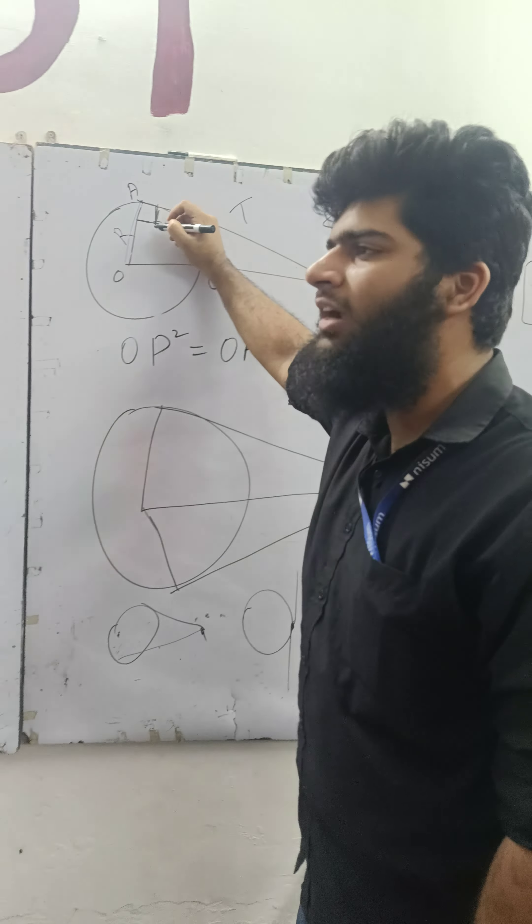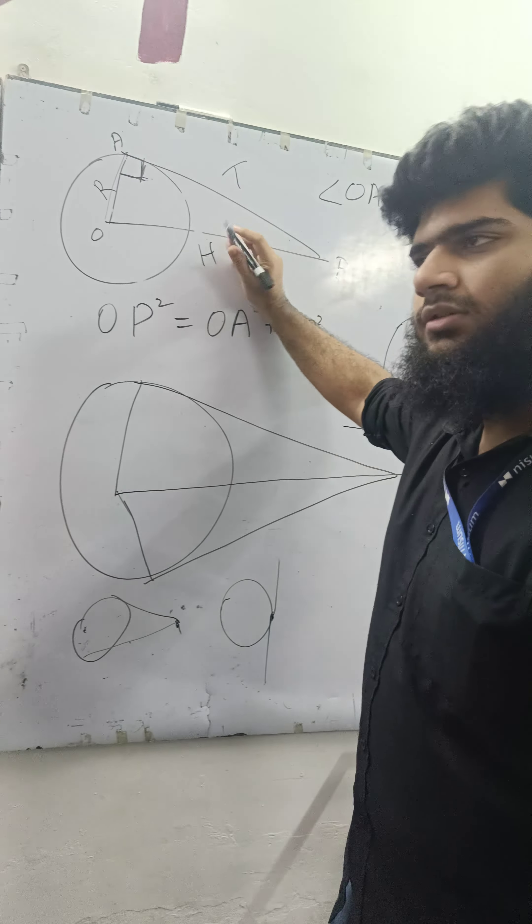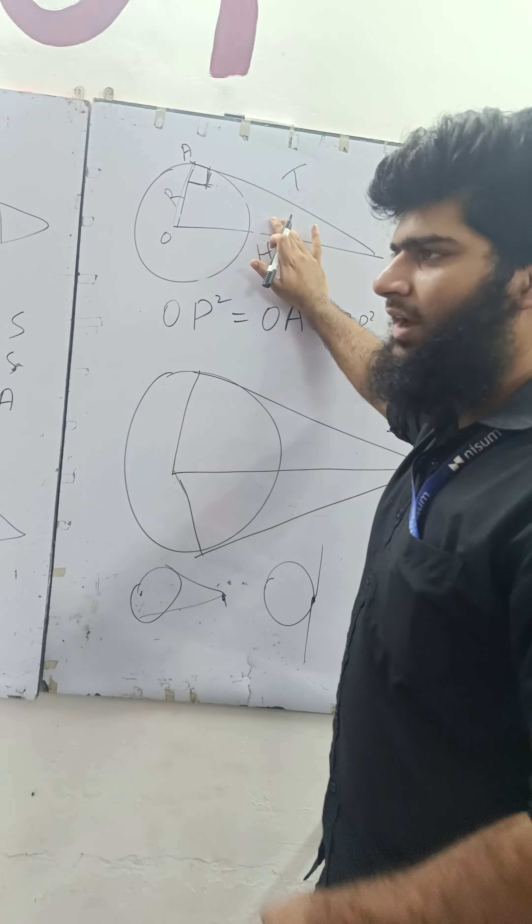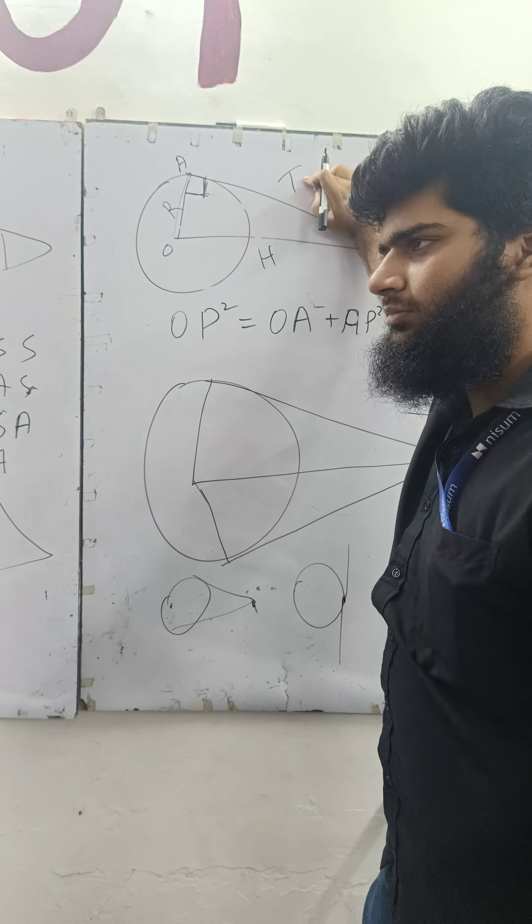So, what is this? Right-angle triangle. This is your hypotenuse. Adjacent. Because right-angle triangle is hypotenuse. Your radius is adjacent and it is your opposite.